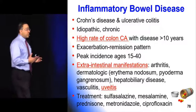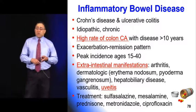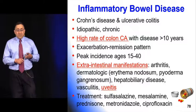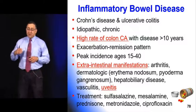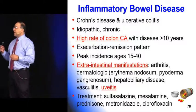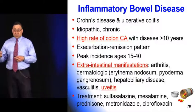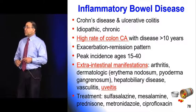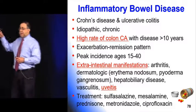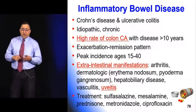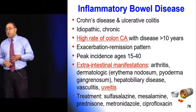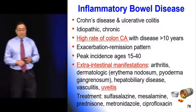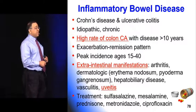In what ways are Crohn's and UC similar? They're both chronic diseases with a relatively high rate of colon cancer over the next one to two decades. They present with exacerbating and remitting patterns and tend to occur in relatively young otherwise healthy adults. They're both often associated with extra-intestinal manifestations — things like arthritis, erythema nodosum, pyoderma gangrenosum, hepatobiliary disease, vasculitis, and uveitis.